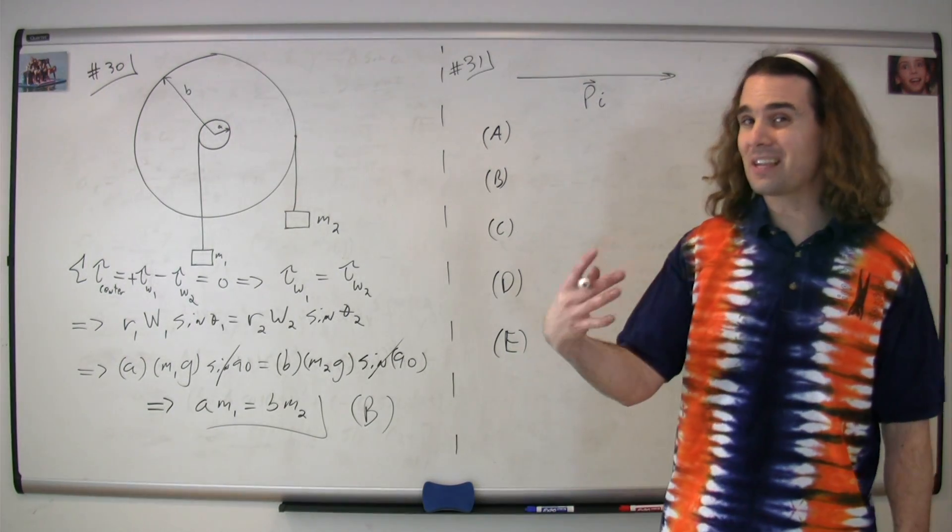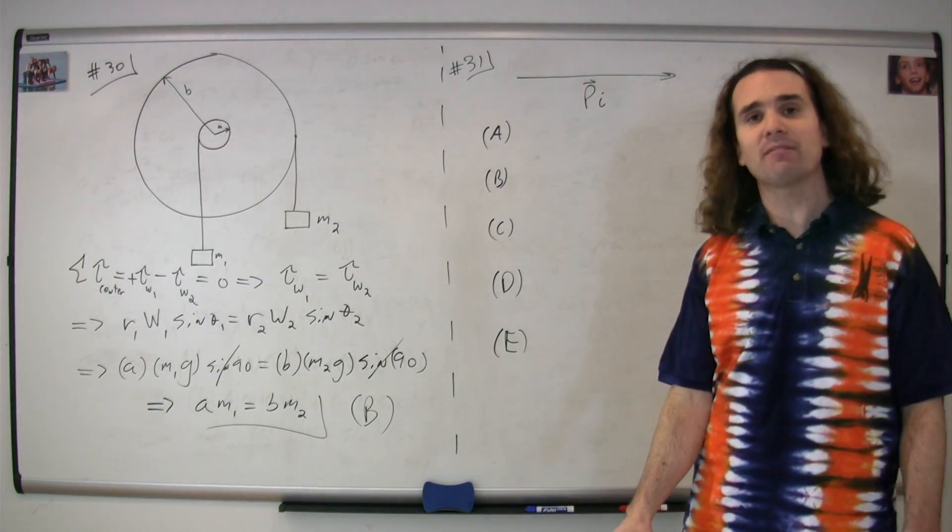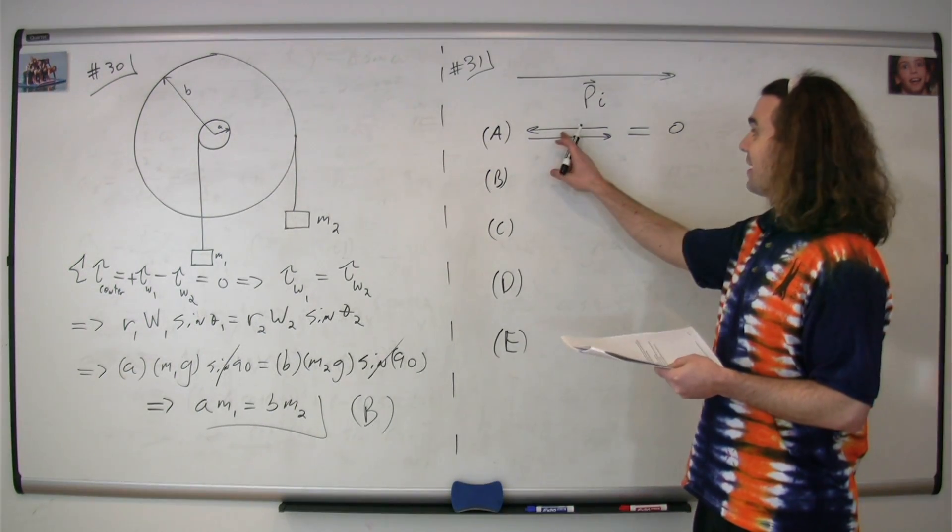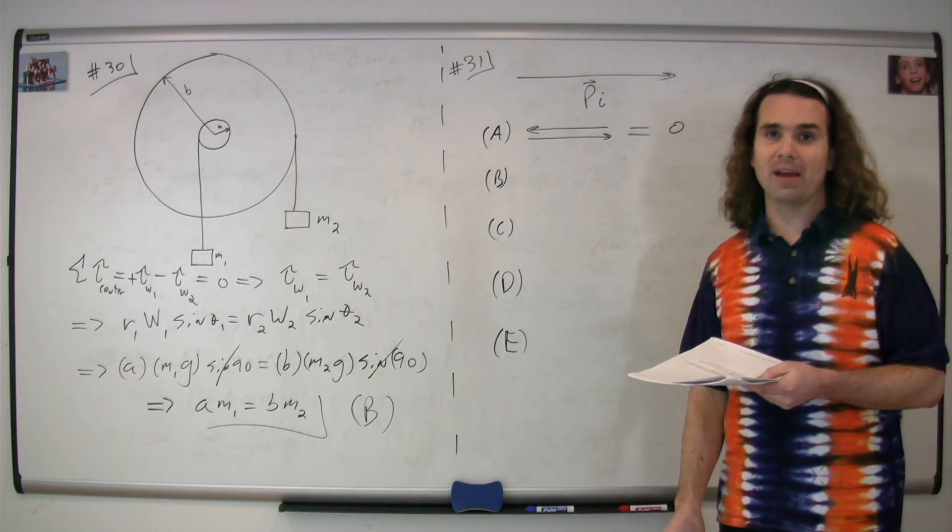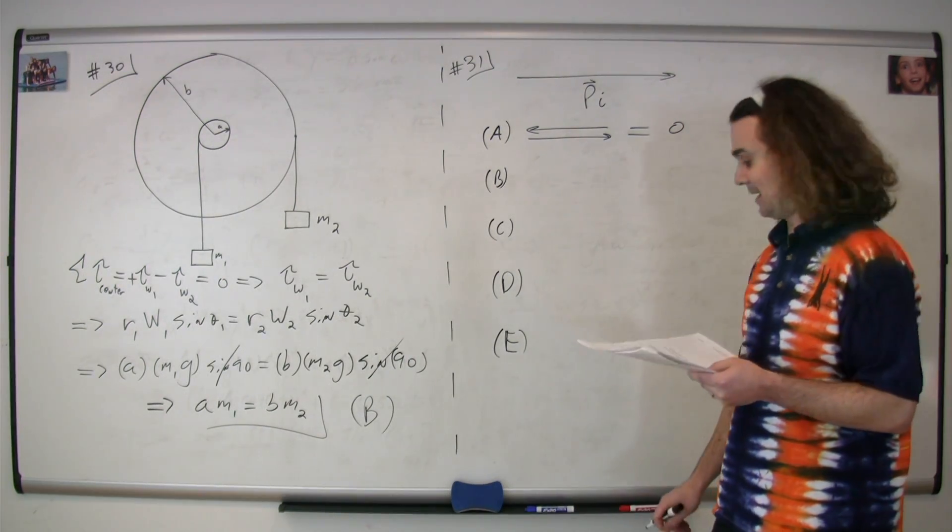So the question is, which of the sets of arrows add up to this, which is both the initial and final momentum of the system? Answer A. Notice that they are equal and opposite in direction, and therefore, when you add the two together, you actually get zero. So A cannot be it.